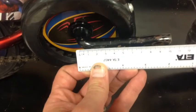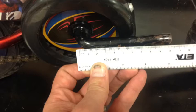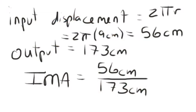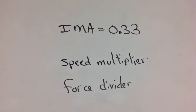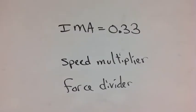The back of the rear wheel started at zero and ended at a little bit more than 170 centimeters, and the radius for the circumference is about 9 centimeters. The input displacement is the pedal circumference, and the IMA turns out to be 0.33 — approximately a third — which means that it is a speed multiplier.